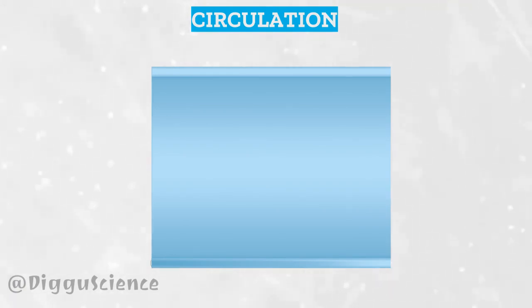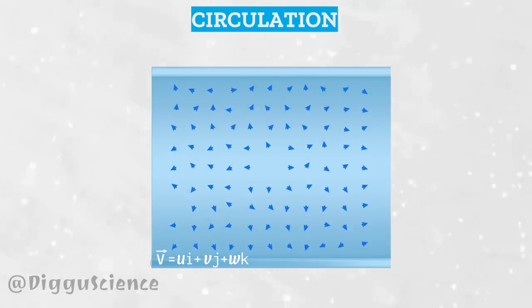This is a side view of a fluid flow. At one point, the velocity of the fluid particles is as follows. Let's say we want to calculate the circulation value of a closed curve.